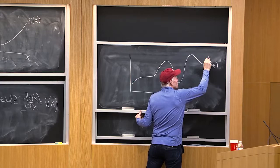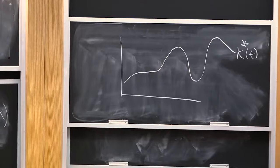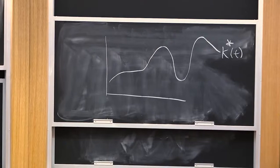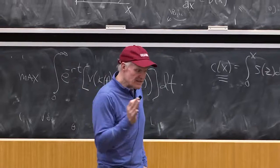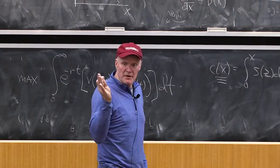This is k of t, some candidate optimal path. And I want to know, what's the first order condition for that problem in order for that to be the optimal path? What must be true? Yeah, that any variation of k dot is not going to make me better off.